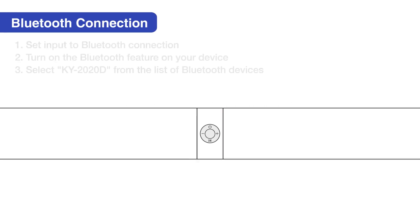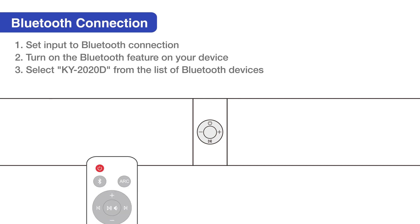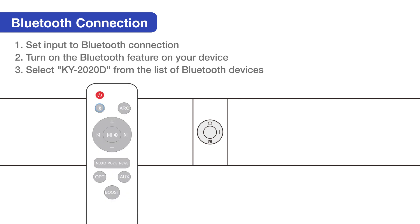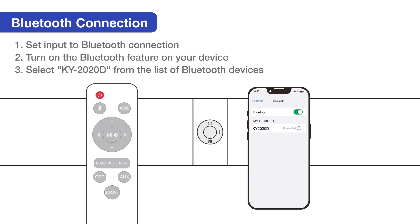Set the soundbar to Bluetooth mode. Next, turn on Bluetooth on your device. Select KY2020D from the list of Bluetooth devices.